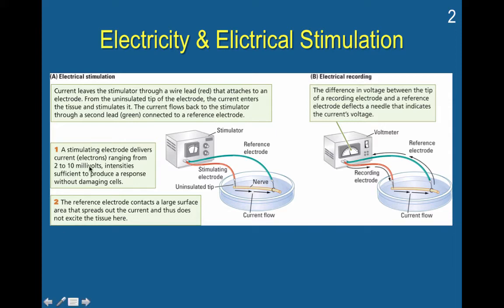Let's take a step back and revisit a little bit of high school physics. If you have an electrical stimulation, current leaves the stimulator through a wire lead — the red wire shown here — and that attaches to an electrode. From the uninsulated tip of the electrode, the current enters the tissue and stimulates it. The current then flows back to the stimulator through a second lead connected to the reference electrode.